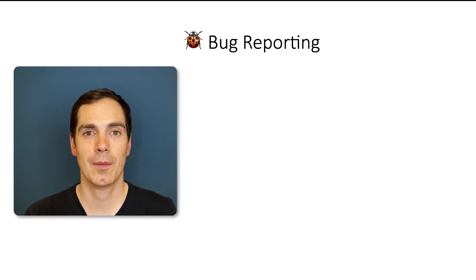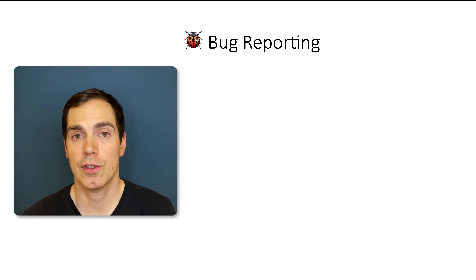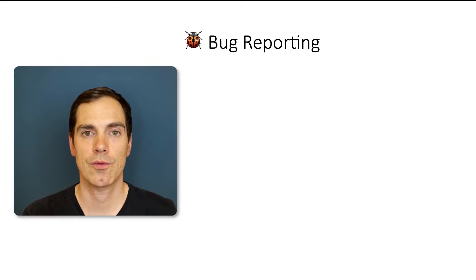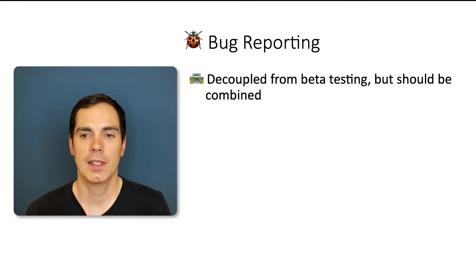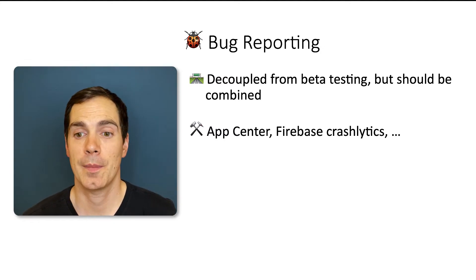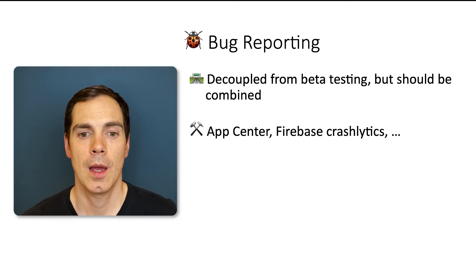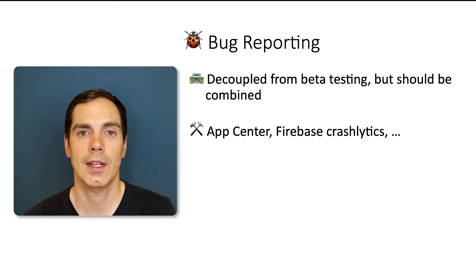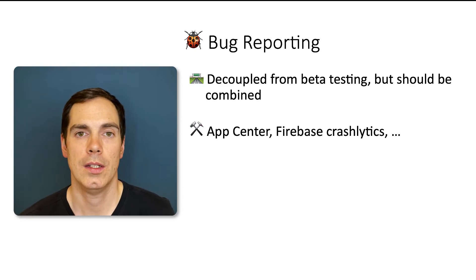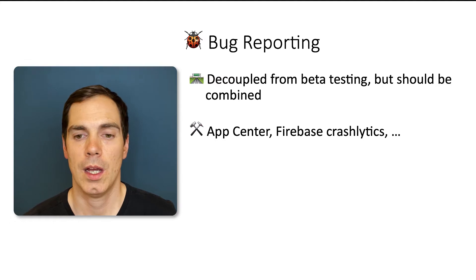Bug reporting is a really important topic when it comes to beta testing, because that's the big benefit of having a beta testing community — users can submit and report bugs or any kind of issues to your development team. It should be decoupled from beta testing but combined. What I mean is that you should also make use of tools such as App Center, Firebase, Crashlytics, or any tools available on the market, and integrate them into the app you ship to your beta testers. Then you get detailed insights on crashes — in case there's an app crash, these tools log the crash, the stack trace, the device information, the mobile network, and so forth.